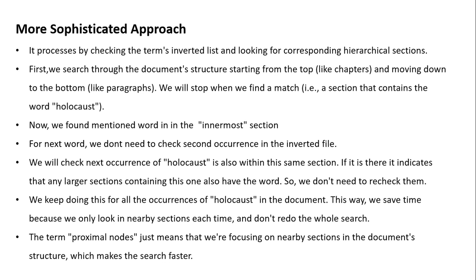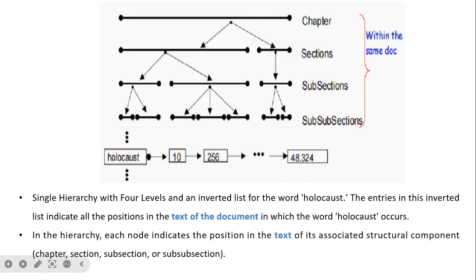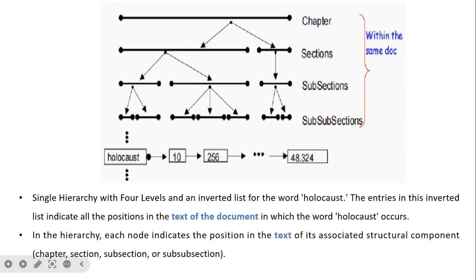The term 'proximal nodes' means focusing on nearby sections in the document structure, which makes search faster. When a word is first found, we check the inverted file index, then navigate down through chapter, section, subsection, and sub-subsection. If the word is found in the innermost sub-subsection, it is also present in its parent subsection, section, and chapter. For the next occurrence, we check within the proximity of the sub-subsection first, before returning to the inverted file index for the next location.